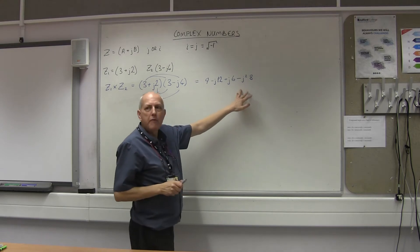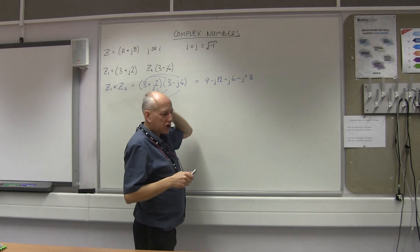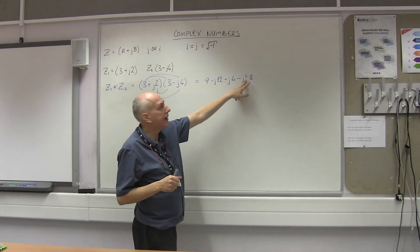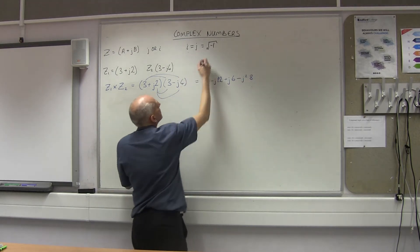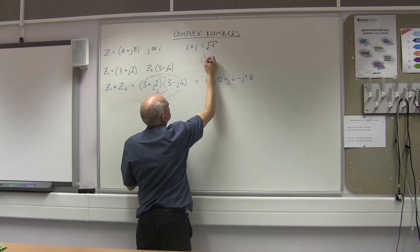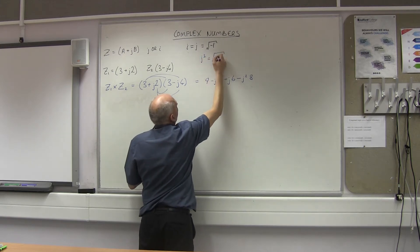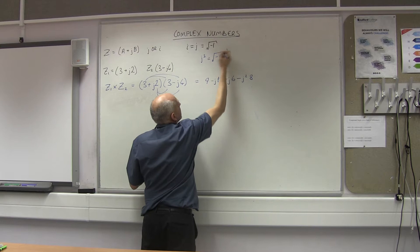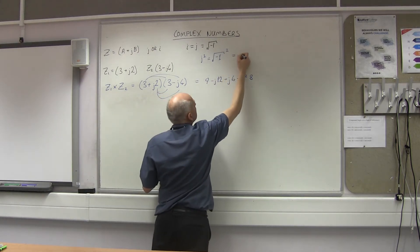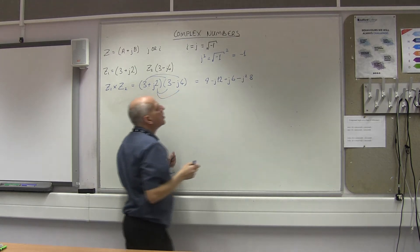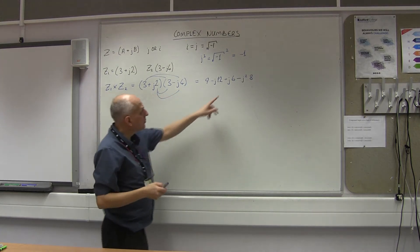It looks like we've invented a third term, but we haven't. Because let's have a closer look at this J squared. If I take this and I square it, if I square my square root we're going to cancel out. So that's going to give me minus 1. So now J squared has become minus 1.